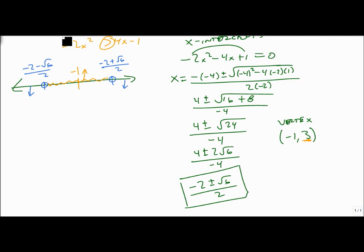Which means my final answer is minus 2 minus root 6 all over 2, to minus 2 plus root 6 all over 2, with open parentheses, because it's not an or equals.